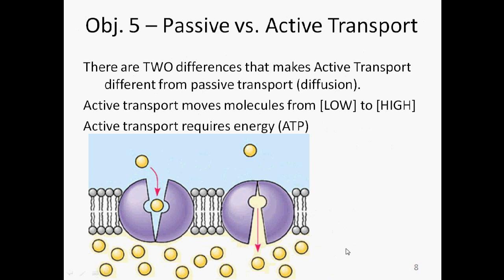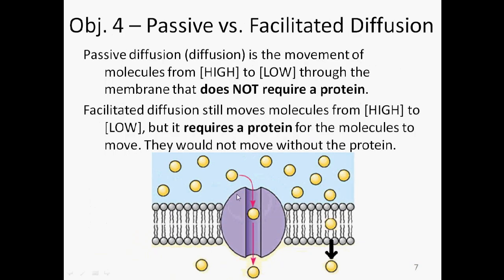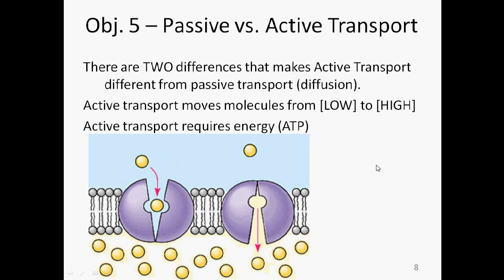Objective five is passive versus active transport. This unit has a lot of either or types of things. The difference between passive and active transport is really easy. There are two things that make active transport active transport. You've already seen passive transport. That was diffusion back here in the previous slide. That's diffusion. Either passive or facilitated. It's still diffusion, movement from high to low. Active transport is backwards.